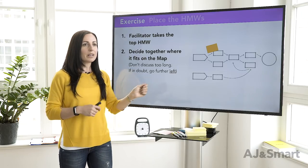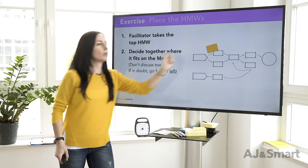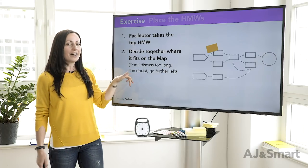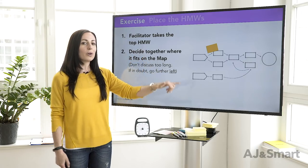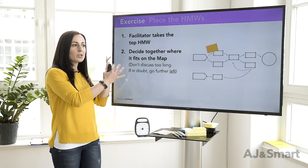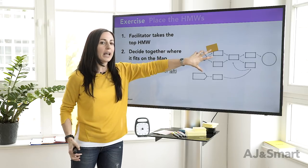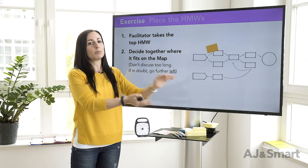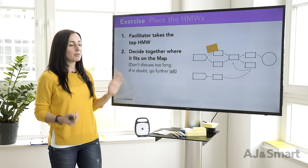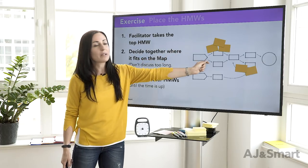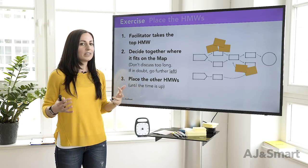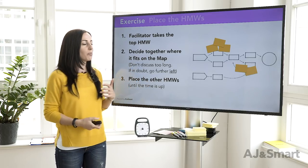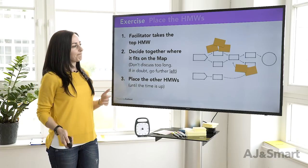The experts and the decider can help you figure out which part of the map each 'How Might We' belongs to. Sometimes there are decisions about whether it goes at the beginning or end of the journey. As a facilitator, if there are two spots where it could go, place it further to the left — further upstream. If you find the target area earlier in the user's journey, it'll probably have a flow-on effect and fix the problems further down as well. Going further left is usually the best choice.